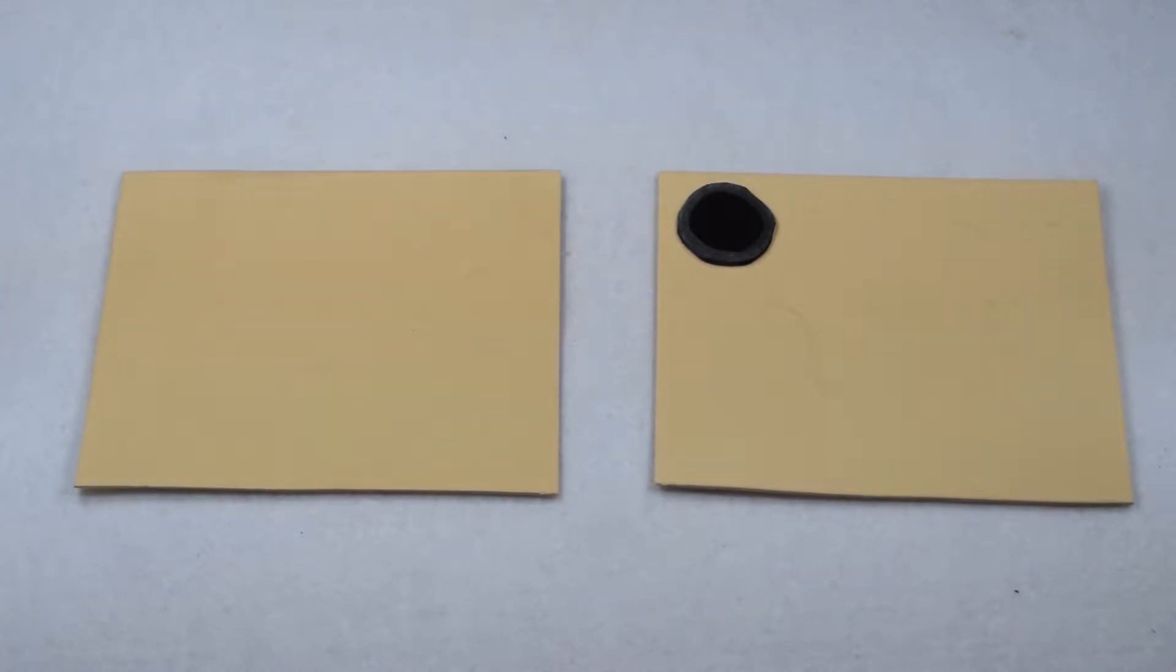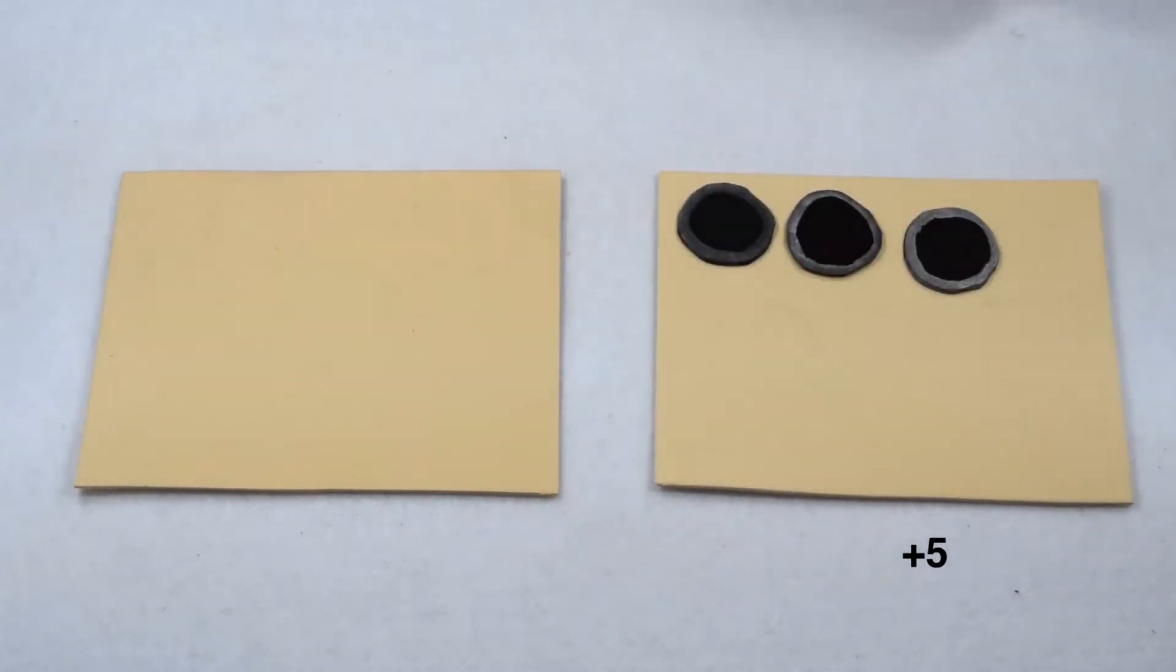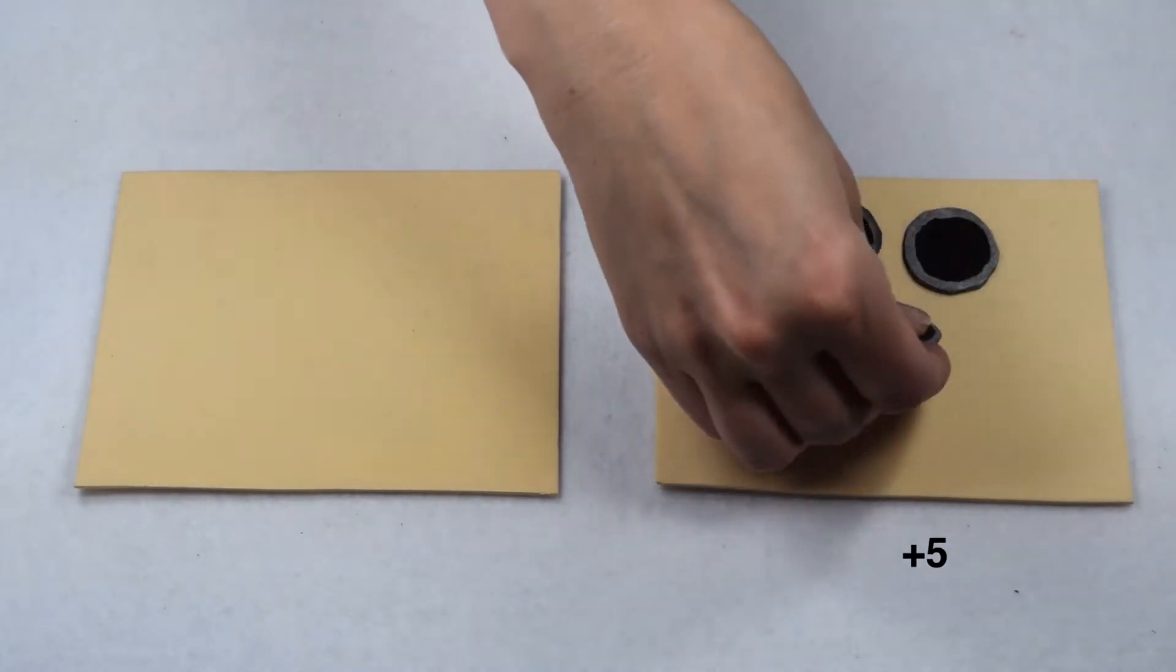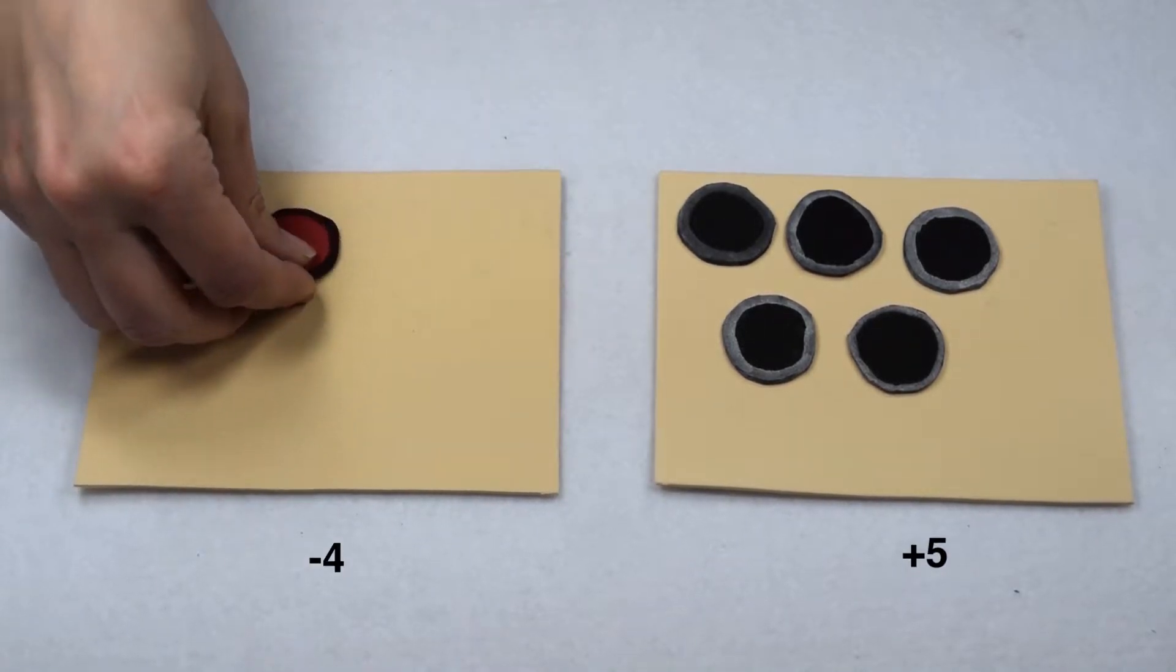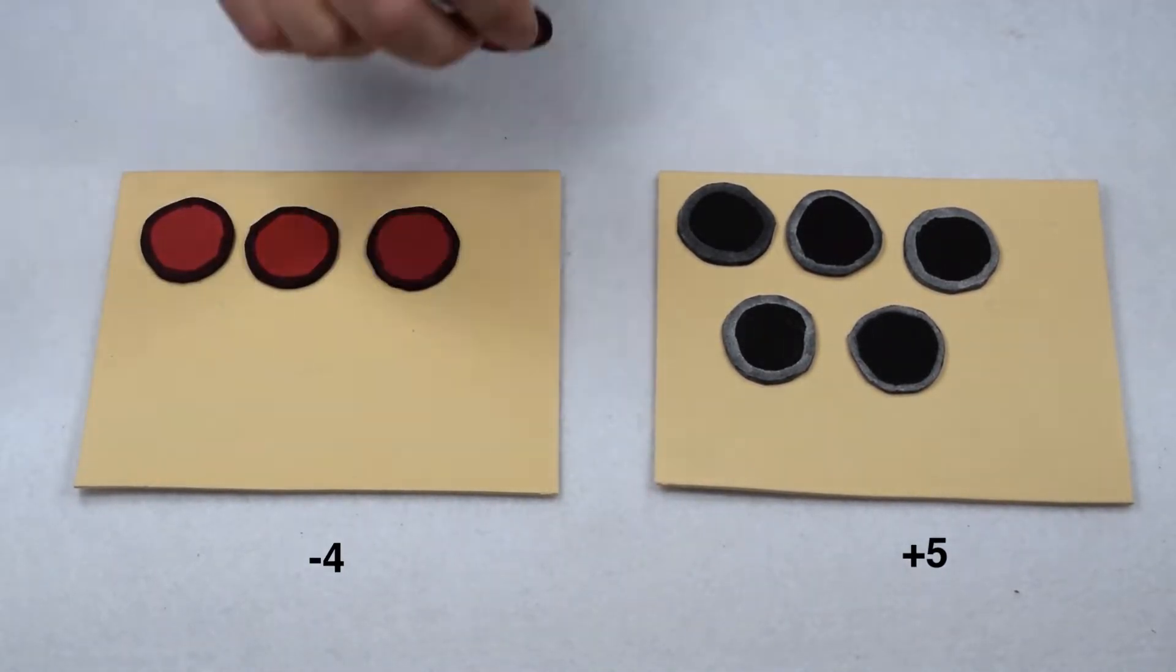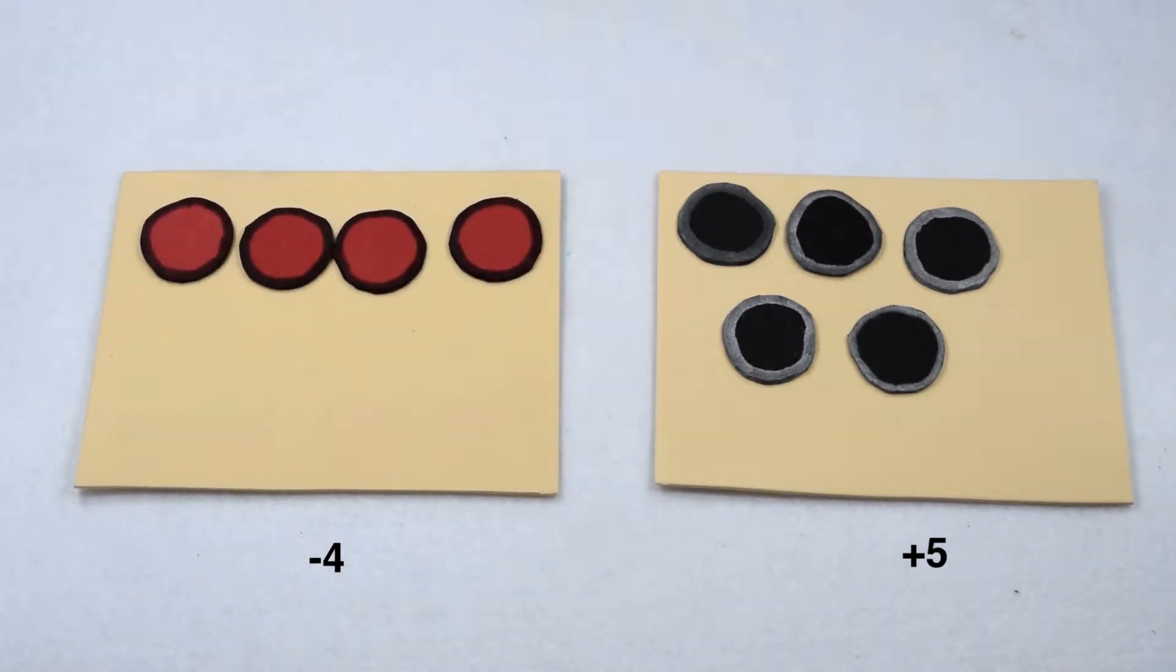So if I wanted to represent positive 5 on my chipboard, I could simply put 5 black chips on my chipboard to show a value of positive 5. Same thing if I wanted to display negative 4, I could place 4 negative chips on my board and it would represent negative 4.